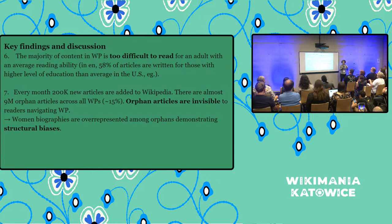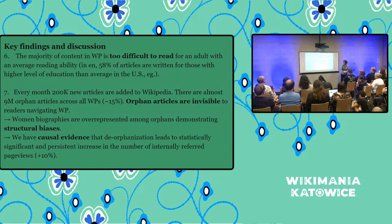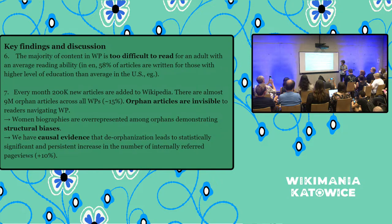This structural bias particularly affects biographies of women — they are overrepresented among the orphan articles. This is important to know because if you're creating an article about a woman and you're not linking to that article, then you're doing amazing work, but you could do one more step. We now have causal evidence that if you actually add an incoming link and de-orphanize this article, we will see a statistically significant and persistent increase in page views to this article. So if you're creating an article, please link to it somehow. Make sure people can reach it.